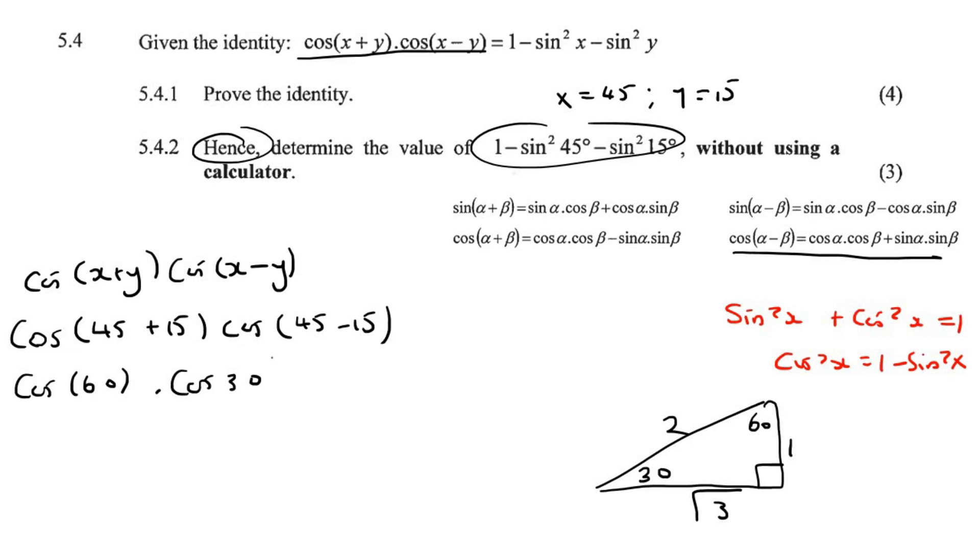And so now we can work out the cos of 60. Cos is adjacent over hypotenuse, so adjacent over hypotenuse, that's a half. And then the cos of 30, adjacent over hypotenuse. So that would be square root 3 over 2. And that's going to give us square root 3 over 4. Thank you.